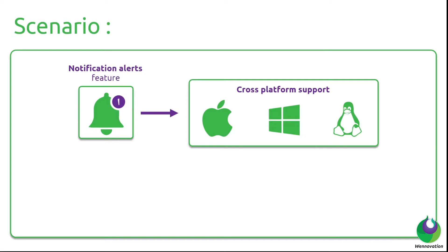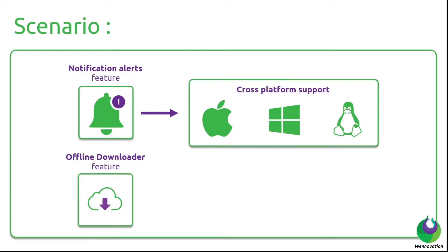Looking back at our notification feature, we did a pretty good job by implementing the factory method pattern and adding extensibility to our design. Now suppose you're assigned a task to add another feature to your desktop application — the offline downloader feature, which is going to enable users to download media presented in different parts of our application to their local storage for viewing offline.